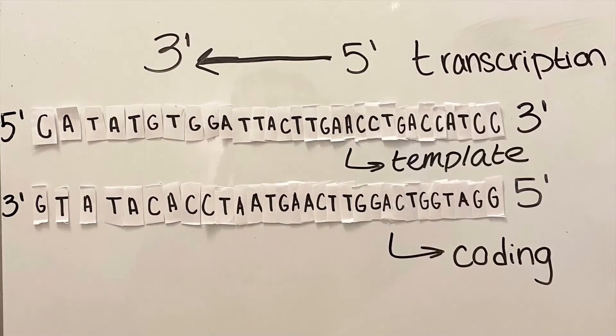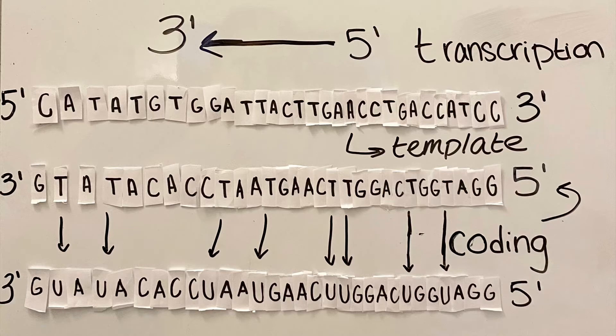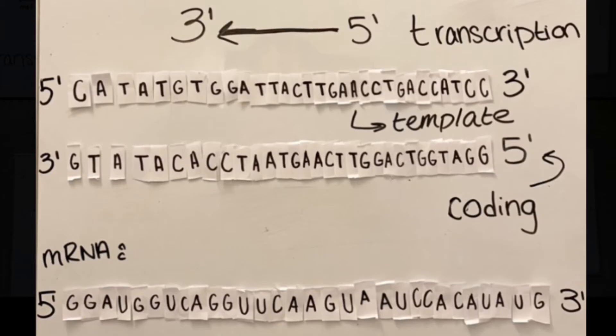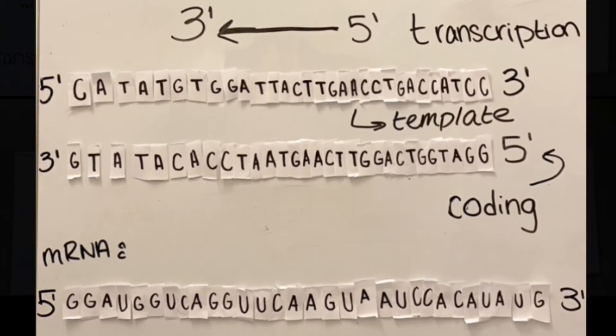This makes the top strand the template sequence. Once the coding sequence is identified, the next step is to transcribe the mRNA by turning all the thymines into uracil. This creates our mRNA sequence in the 3' to 5' direction, which needs to be flipped to the 5' to 3' direction.